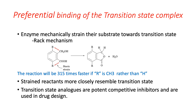When the R group is CH3 it is bulkier, steric repulsion is greater, and the reaction is faster. When the R group is H, steric repulsion is less and the reaction is slower. The preferential binding of the transition state increases its concentration and therefore preferentially increases the reaction rate — if more transition state molecules are present at the active site, more molecules will convert to product and the reaction rate increases.